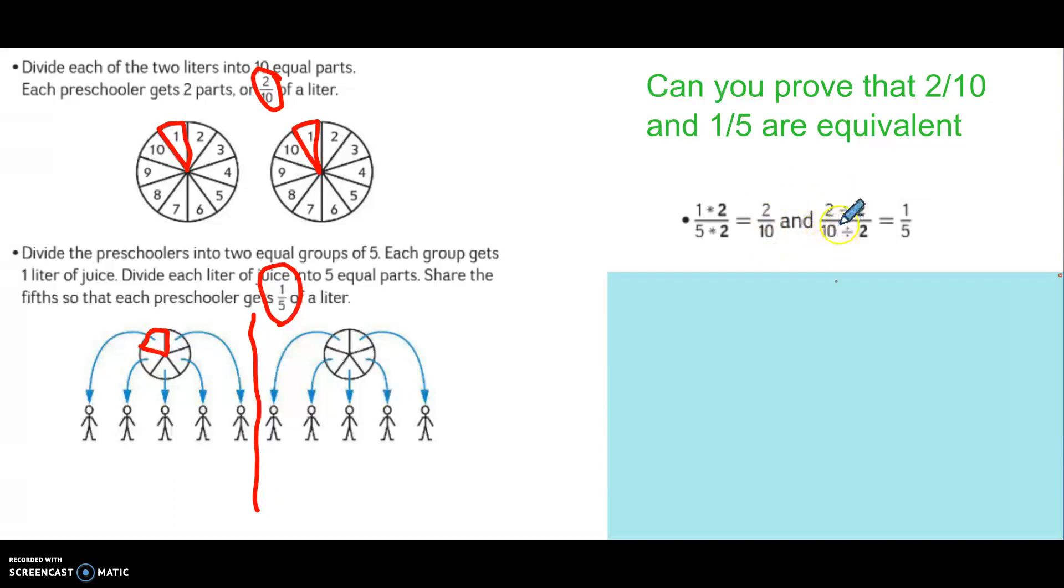Now if I start with my two-tenths and I want to find a smaller equivalent fraction, I can use division. So dividing by two, I get my one-fifth.